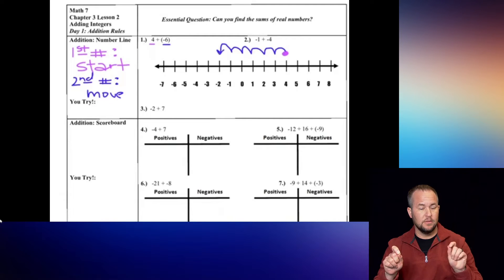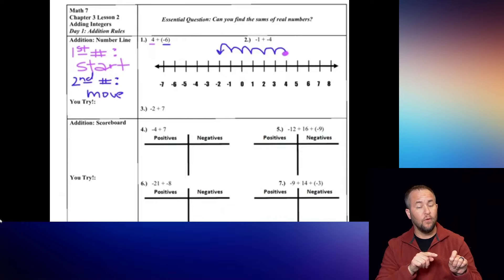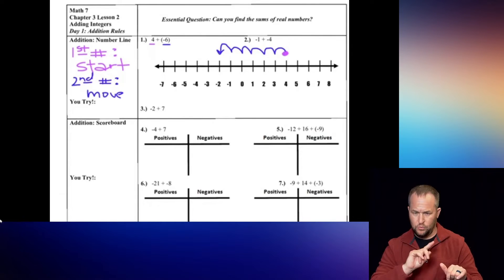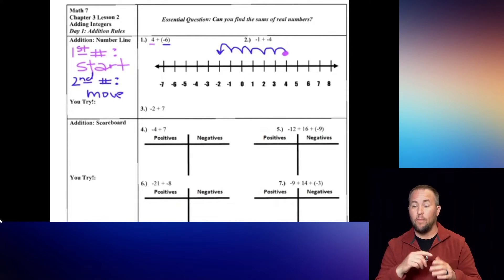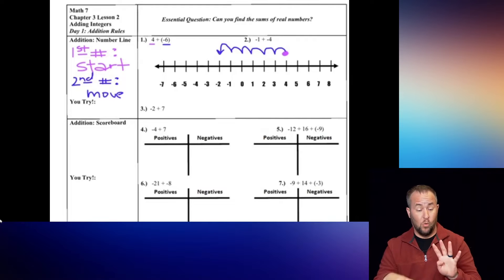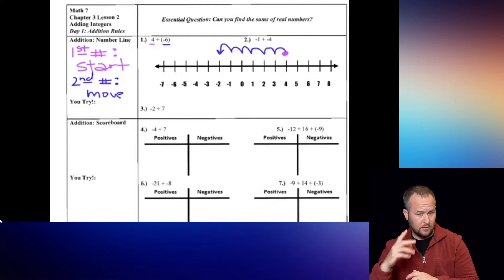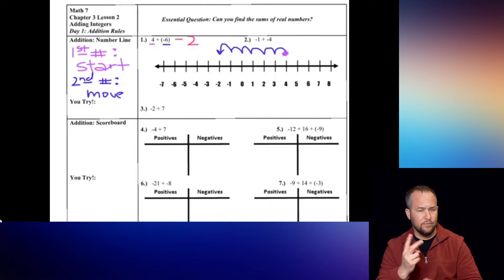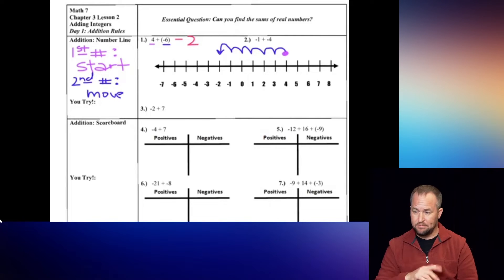Where you end up is going to be our final answer. So therefore, 4 plus a negative 6 gives us a final answer of negative 2, because that's where we ended up.